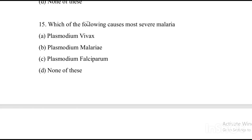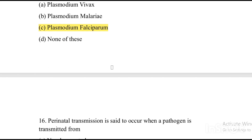Next question: Which of the following causes the most severe malaria? Option A: Plasmodium vivax. Option B: Plasmodium malariae. Option C: Plasmodium falciparum. Option D: none of these. The answer is Option C, Plasmodium falciparum.